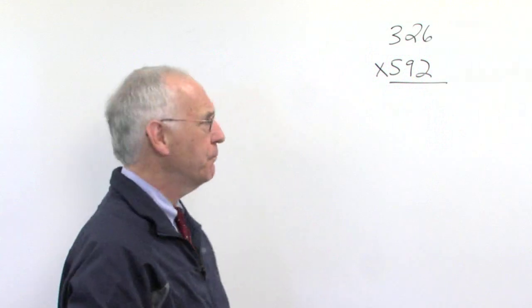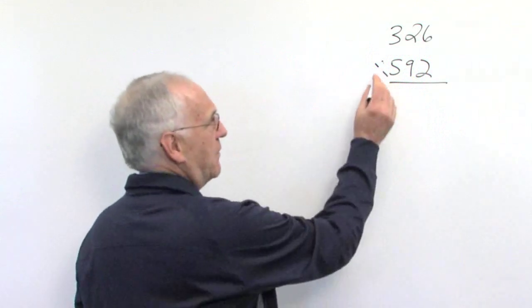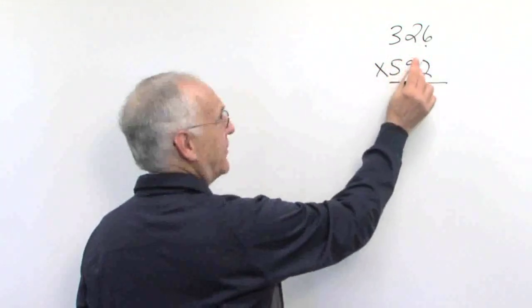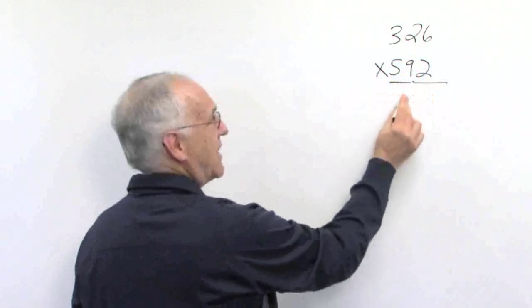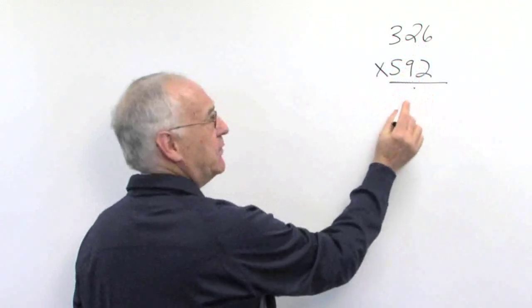Now let's look at the problem. Here we see in multiplication 326 times 592. Notice we have multiple digits. Let's begin.